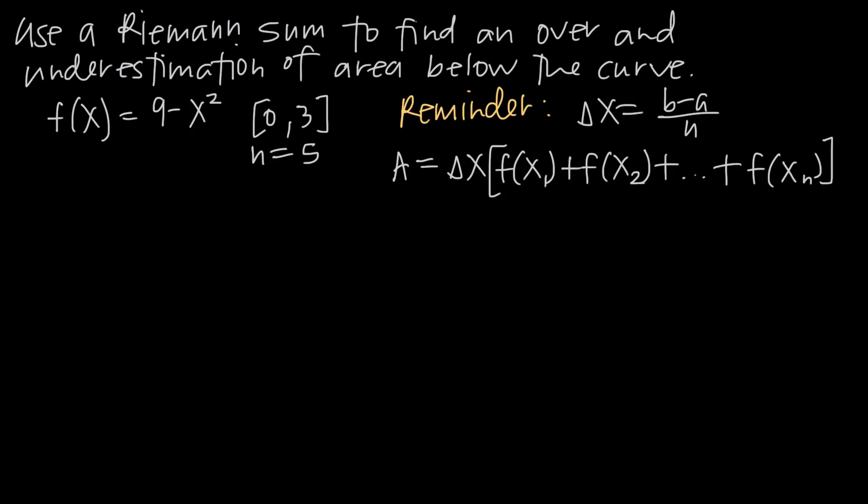In this video, we're talking about how to use Riemann sums to find an overestimation and an underestimation of the area underneath the curve. In this particular problem, the function we've been given is f equals 9 minus x squared. We're interested in approximating the area over the interval 0 to 3, and we've been told that we're using 5 subintervals, so n equals 5.